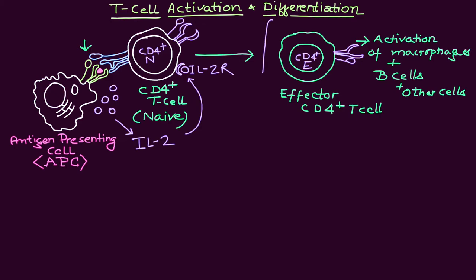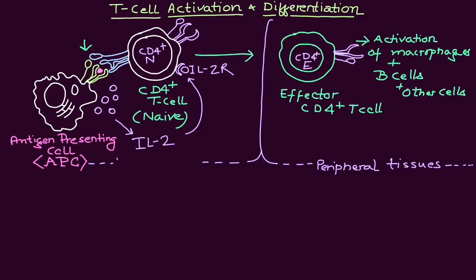The stage of differentiation into effector and memory T cells will occur in peripheral tissue. The initial stage of antigen presentation will occur in lymphoid organs. This is an important distinction to remember.